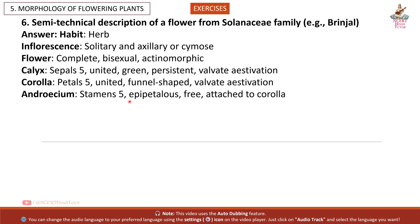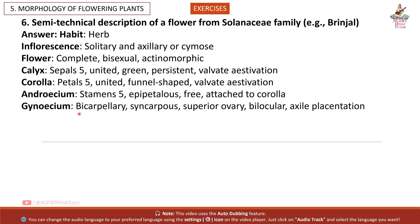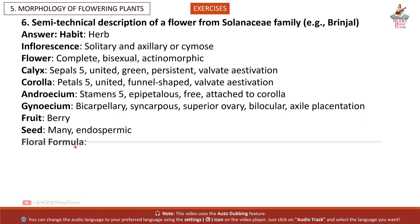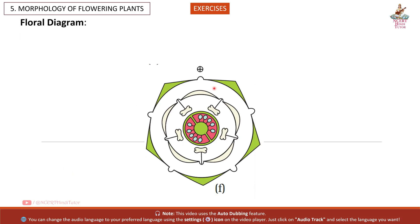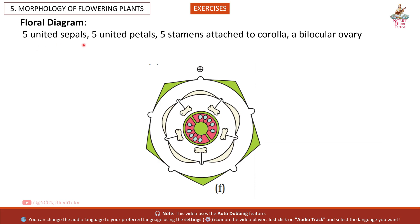Androecium: stamens 5, epipetalous, free, attached to corolla. Gynoecium: bicarpellary ovary, syncarpous, superior ovary, bilocular, axile placentation. Fruit: berry. Seed: many, endospermic. So friends, this is the floral formula and this is the floral diagram — 5 united sepals, 5 united petals, 5 stamens attached to corolla, a bilocular ovary.